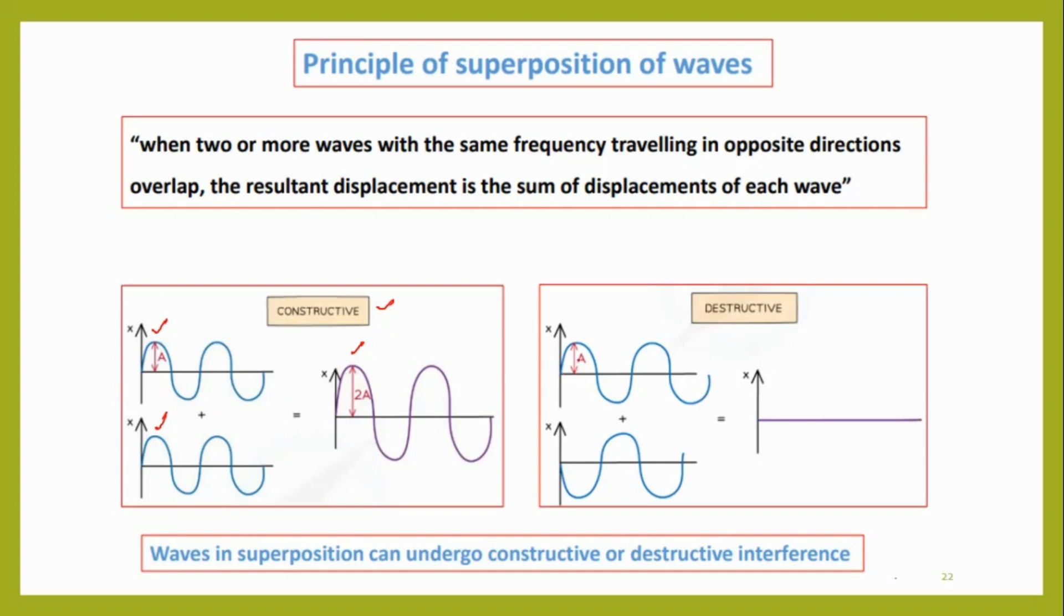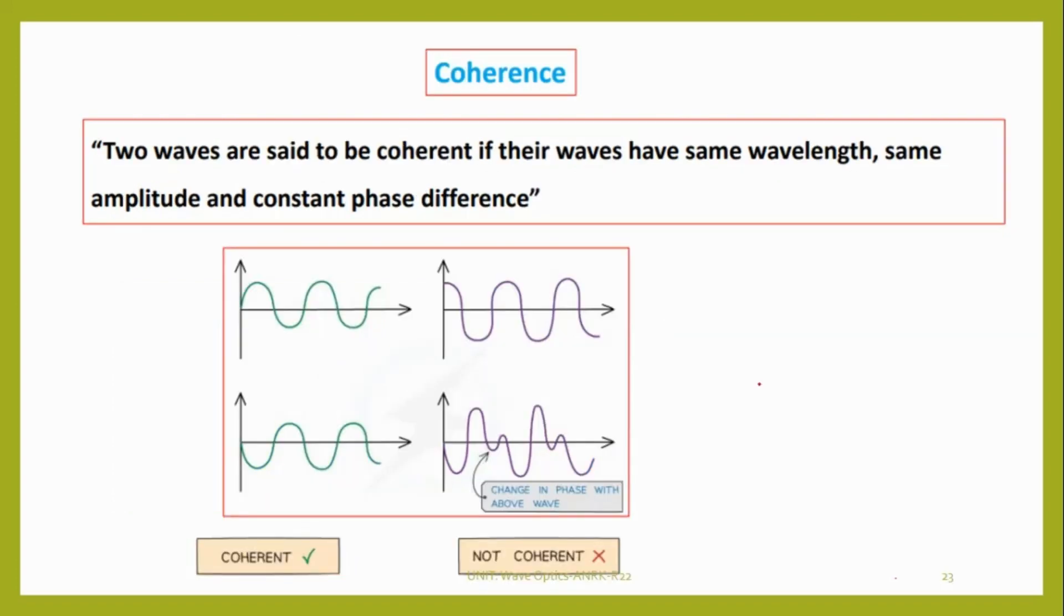Whereas, if both are out of phase, with same frequency and amplitude, the resultant will be zero. Both will cancel each other. This is the principle of superposition of waves.